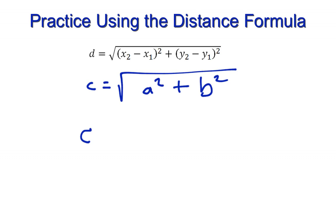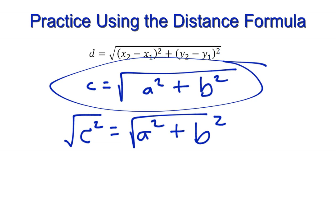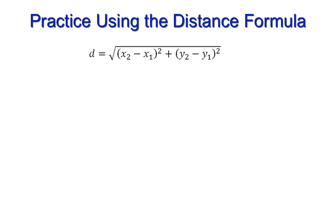If we square root both sides of the Pythagorean Theorem, which looks like this, then we get this here. So the distance formula shows us the run squared plus the rise squared, all being square rooted, and that's equal to the distance between two points.